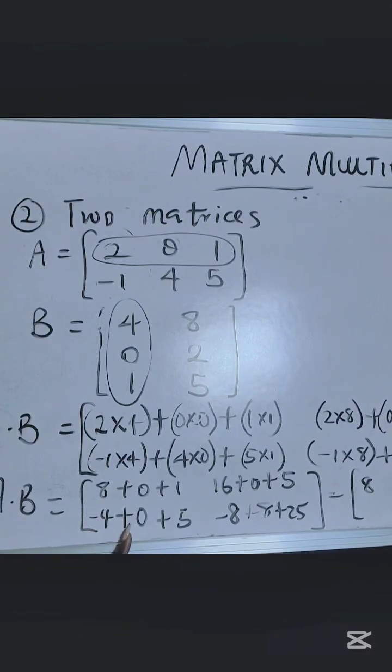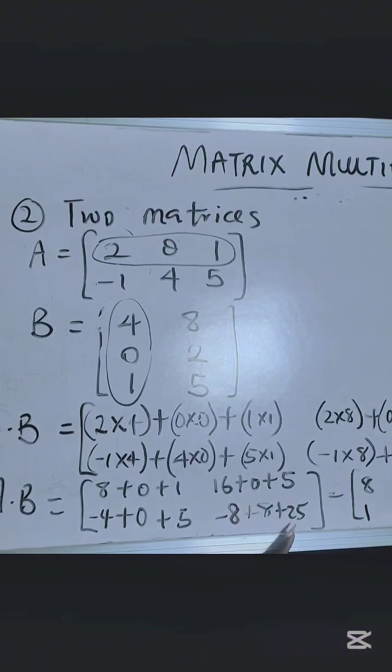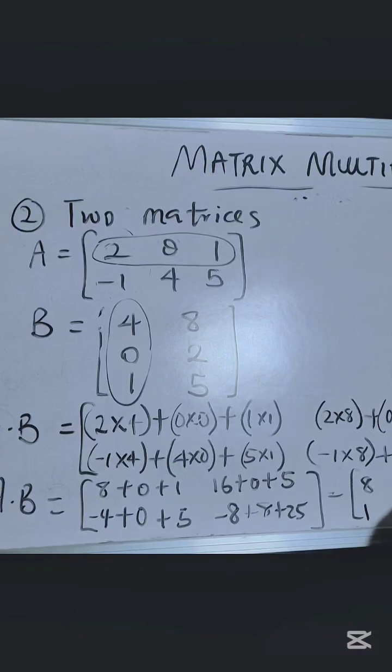Minus 4 plus 0 is minus 4, plus 5 is 1. And then minus 8 plus 8 is 0, plus 5... 25 is 25.